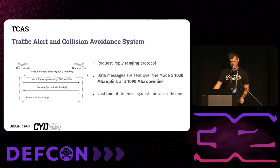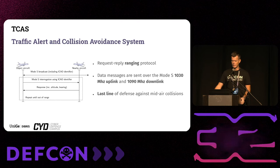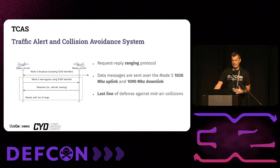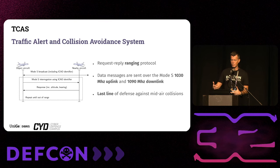The Traffic Alert and Collision Avoidance System is a ranging protocol between aircraft, based on request-reply exchanges on the 1030 MHz uplink and 1090 MHz downlink. Interrogations and replies happen to determine whether a collision is developing and how to avoid it. This is a very important system because it is the last line of defense against mid-air collisions if other systems like secondary radar or ADS-B have failed to maintain separation.